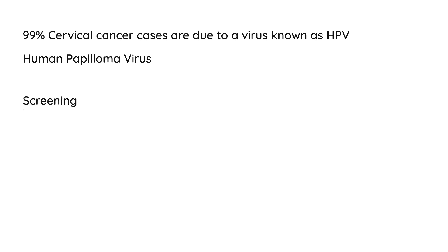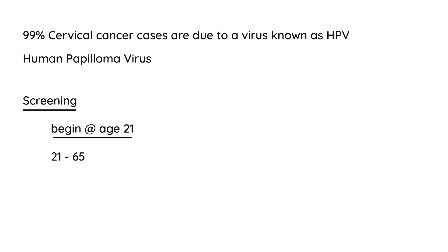Let's talk about screening — specifically when you should do it. Cervical cancer screening guidelines have changed many times, so here is the current recommendation, at least in North America: begin at age 21, regardless of sexual activity. Before, they used to say only when the person becomes sexually active, but that's no longer the recommendation. From age 21 to 65, do a pap smear every three years. And after a hysterectomy, you don't need to do a pap smear anymore, because the cervix is gone.